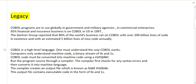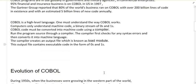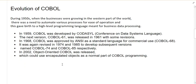There are over 200 billion lines of COBOL code in existence, with an estimated 5 billion new lines written annually. COBOL is a high-level language — computers only understand machine code, a binary stream of 0s and 1s, so COBOL code must be converted into machine code using a compiler. The compiler first checks for syntax errors, then converts the source into machine language, creating an output file known as a load module, which contains executable code in the form of zeros and ones.